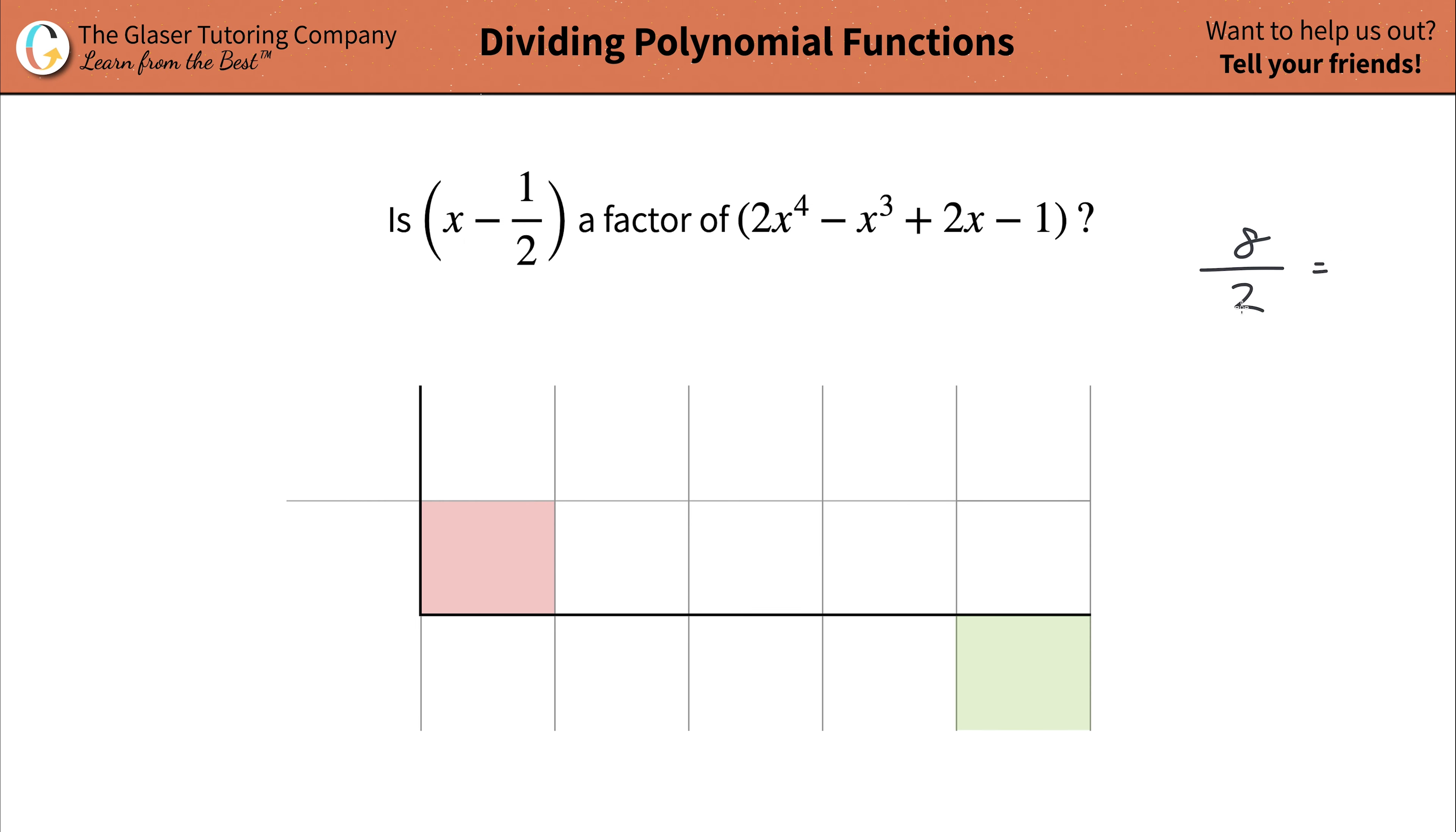That turns out to be the same thing here. I know it's just not eight and two, it looks a little crazy. But what we have to do is determine whether this thing divides nicely without a remainder, or in other words, a remainder of zero into this polynomial function.